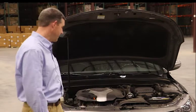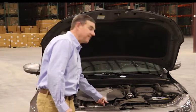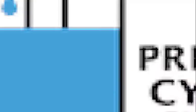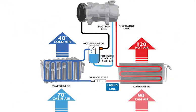The AC condenser is located right in front of the radiator. The purpose of the condenser is to release heat and change the state of the refrigerant from vapor to liquid. The condenser receives high-temperature, high-pressure vapor from the compressor and converts it to a liquid through condensation.